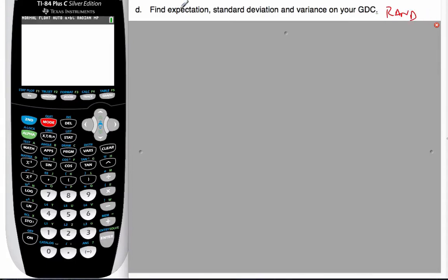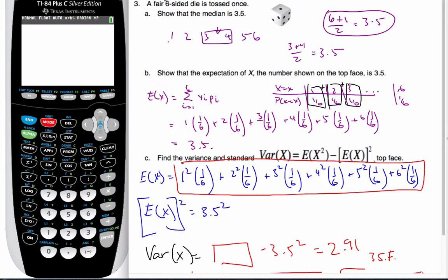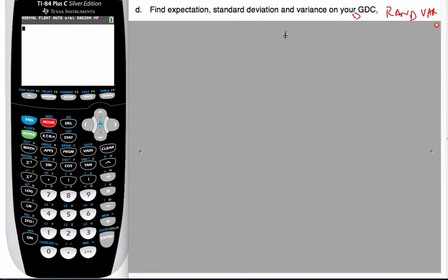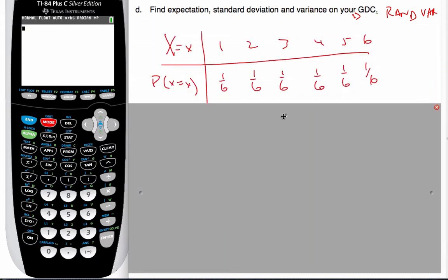So we are going to talk about finding expectation, standard deviation, and variance on our GDC of a random variable, specifically a discrete random variable. And so we're going to do the same problem that we had just a moment ago where we toss a six-sided dice. I wrote out the probability distribution. That's the probability distribution for a six-sided dice.